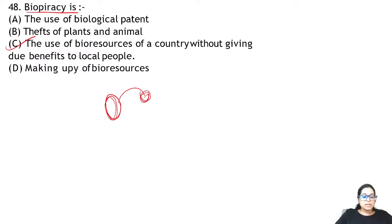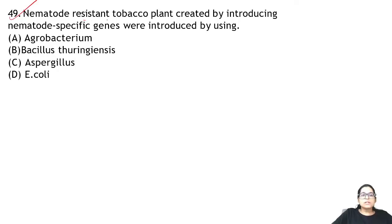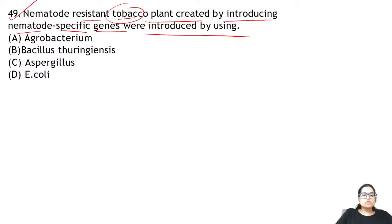Question 49: nematode-resistant tobacco plant was created by introducing a nematode-specific gene — and this was done using Agrobacterium. Answer for 49 is A, using Agrobacterium.